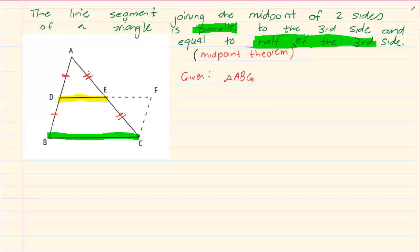We are given triangle ABC. We are also given that D and E are midpoints of AB and AC.